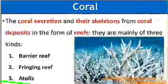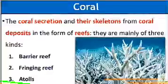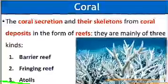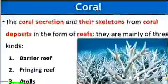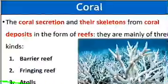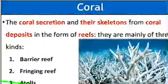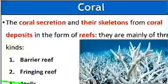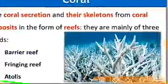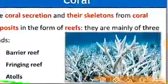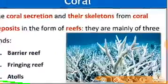Coral deposits are in the form of reefs. These reefs are of three kinds: Barrier Reef, Fringing Reef, and Atolls.